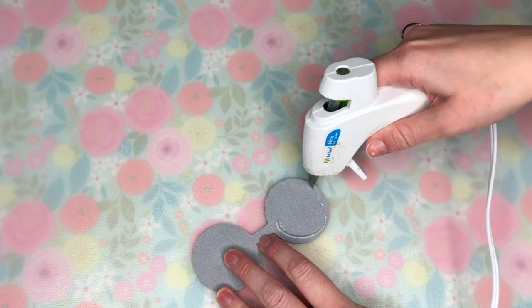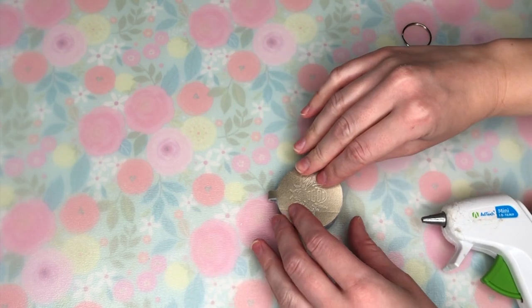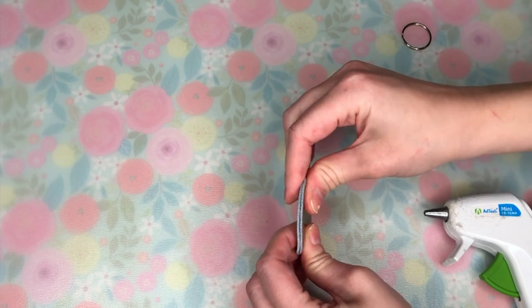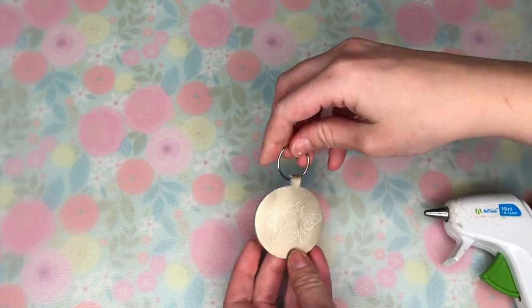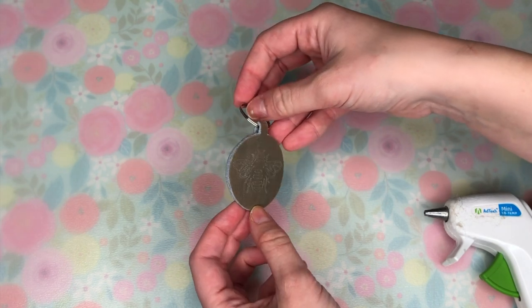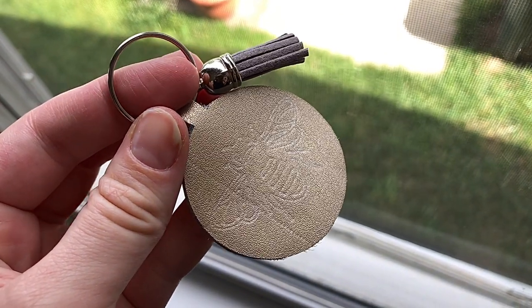To make it into a keychain I added some hot glue to one side and then folded it over making sure I did not hot glue the little section where the keyring is going to go through and I just threaded through my keyring and my adorable bee keychain was complete.